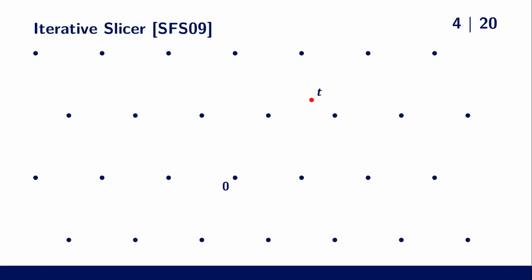One particular simple CVP algorithm is the iterative slicer. For the preprocessing, we obtain a list of preferably short lattice vectors. In this example, we have these 6 vectors in our list.